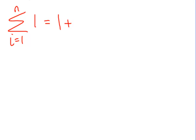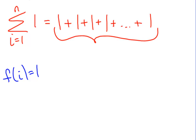What do you get when you plug in 2? 1. When you plug in 3, you get 1. When you plug in 4, you get 1. If you're confused, think of this as the function f of i equals 1. No matter what you put in for i, you're going to get 1. So we do this. Everything we put in gives us 1. How many 1's do we have? n. So what's the answer to this? n.